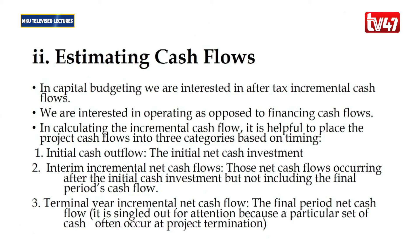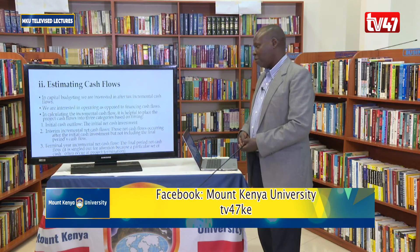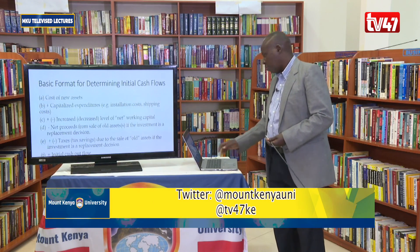The initial cash flow is basically the initial investment — the amount of money the company will invest in the project. The interim incremental net cash flows are the expected cash flows from year one to the almost last year. The terminal year incremental net cash flow focuses on what comes to the firm at the end of the useful life of the project.